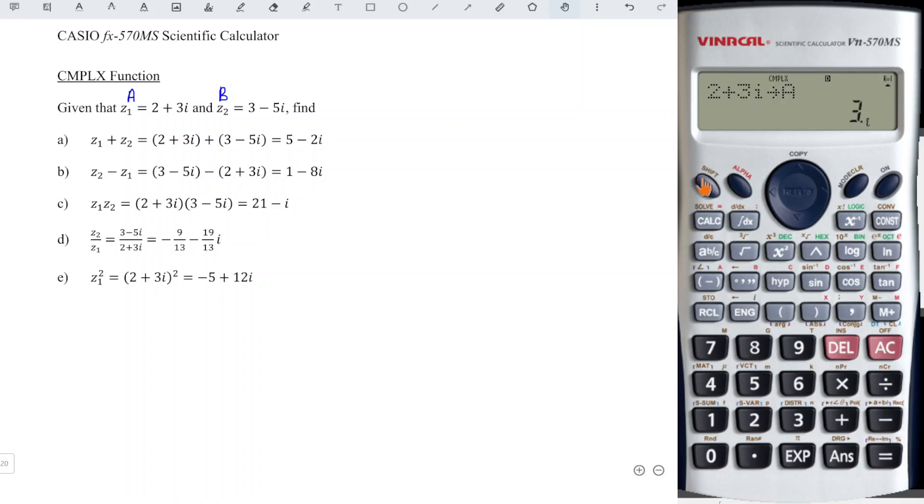Same goes to b. So we have 3 - 5i and we store Shift RCL, immediately press the button containing b, already stored. Now we are going to perform mathematical operations.